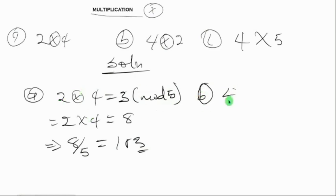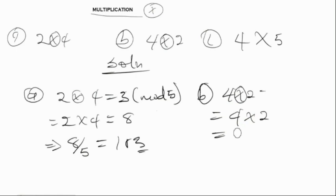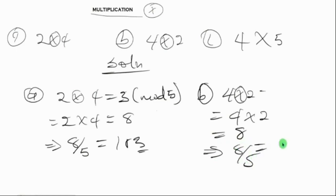For B, we solve four times two, which equals eight. When we divide by the mod, which is five, it equals one remainder three. We can see that four times two and two times four are equal even in mod — both give three in mod five.